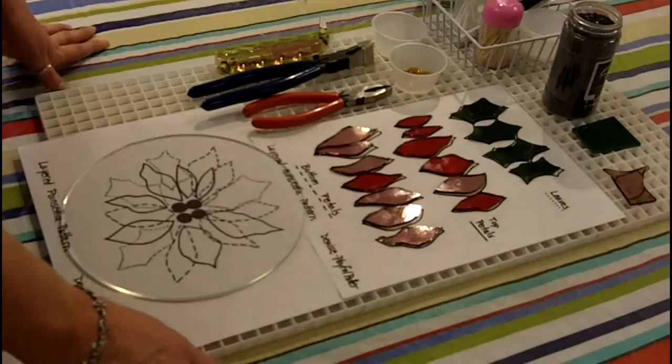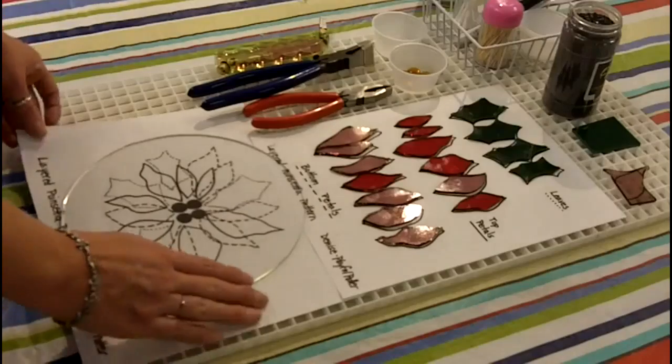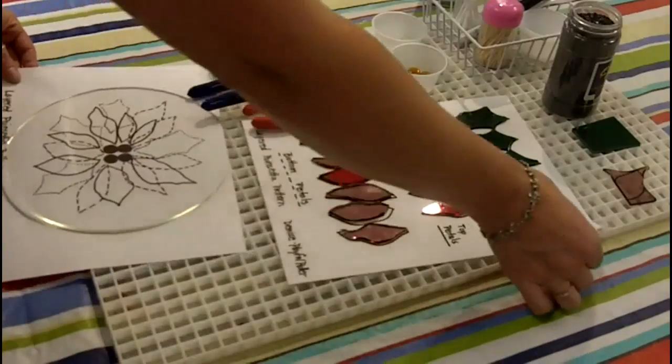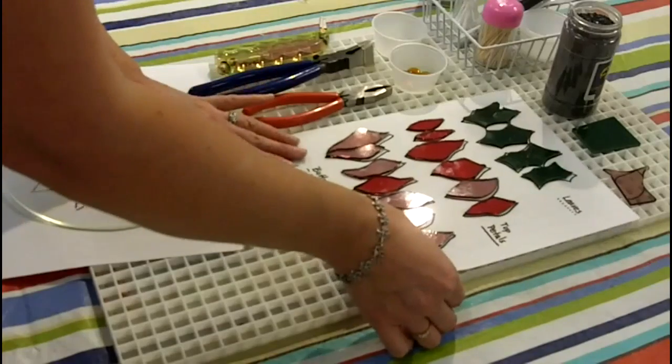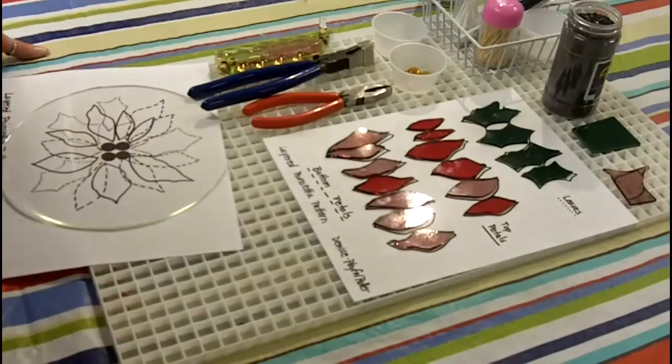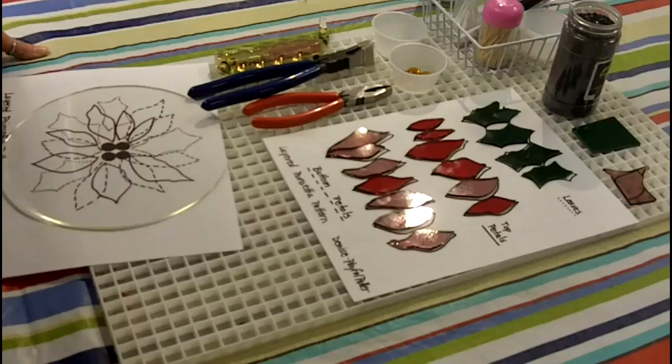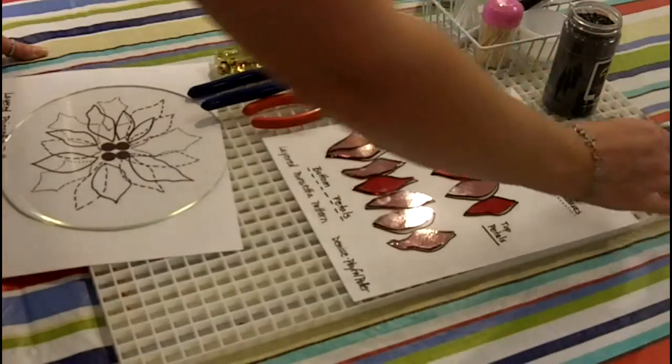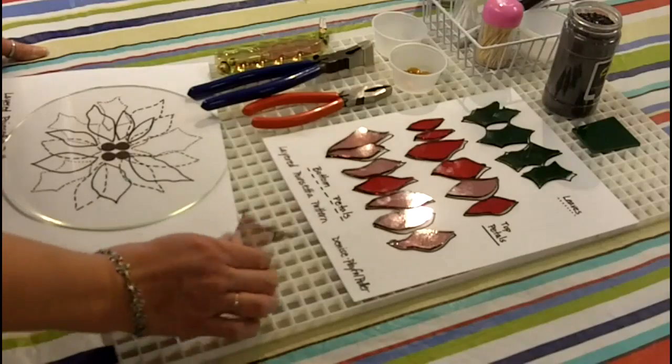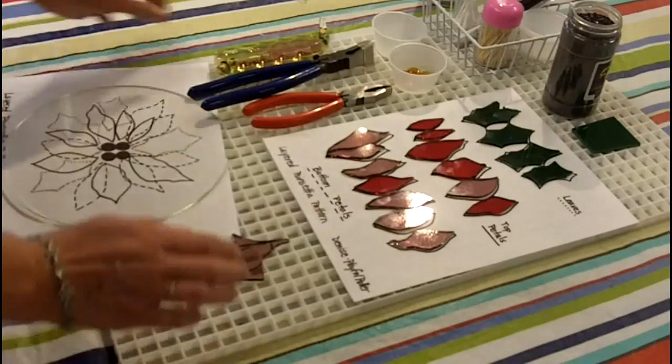I've already cut my shapes, but I am going to demonstrate for you. I like to use a lot of scrap glass. This poinsettia plate looks wonderful with a variety of different types of glass or colors of glass. You can use opal glass, you can use transparent glass. It really just depends on what your customer is looking for. I like to use a lot of scrap glass, so I drew a sample of one of the petals on this layer of glass.